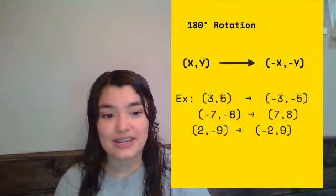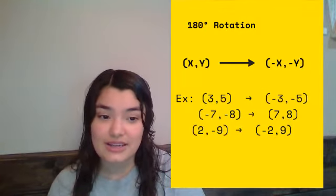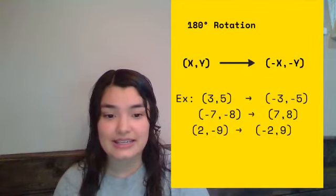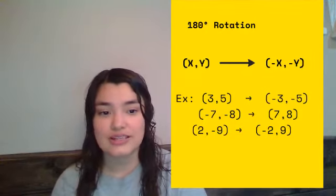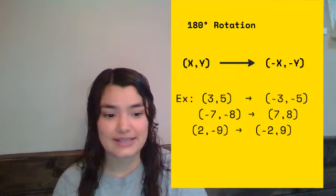Your second example, (-7,-8), the opposite is (7,8). And (2,-9), the opposite would be (-2,9). Your coordinates simply flip to its complete opposite signs.